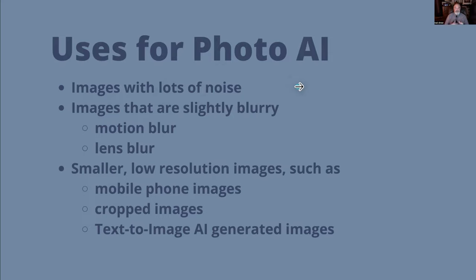What are we going to use it for? To eliminate noise, to eliminate blur — if you have motion blur from hand-holding a shot or lens blur, Photo AI will identify that and recommend how much sharpening to do. It's also great for low-resolution images. Many of us use mobile phones these days — the sensor in the iPhone is so small that the most we're going to get is about a 12-megapixel image in most cases, or we might crop into a larger image and end up with a small segment.